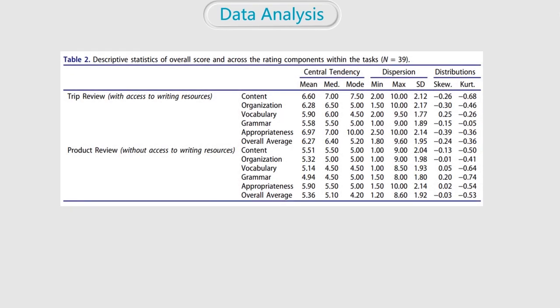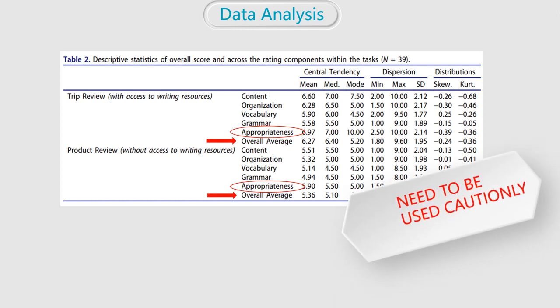Then, the following table presents the descriptive statistics of overall score and across the written components within the two tasks. It could be seen that the average score of trip review, which is writing resource supported, is higher than the product review, which does not provide access to writing resources. And in both tasks, students tend to perform better in the components of appropriateness. However, this data needs to be used in caution because the difficulty of tasks themselves may also influence the performance, which is one of the main limitations that we are going to talk later.